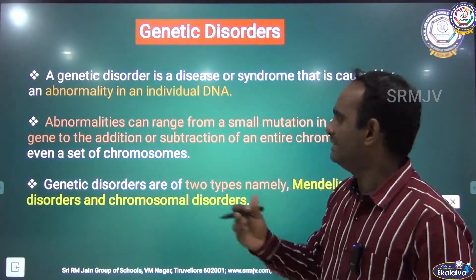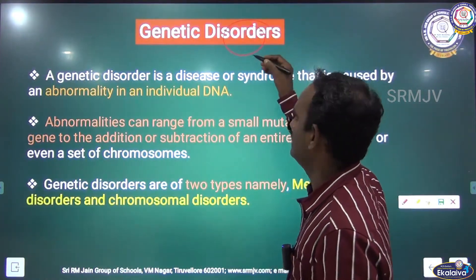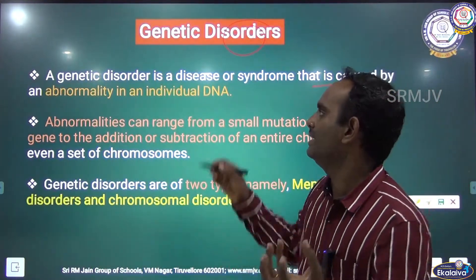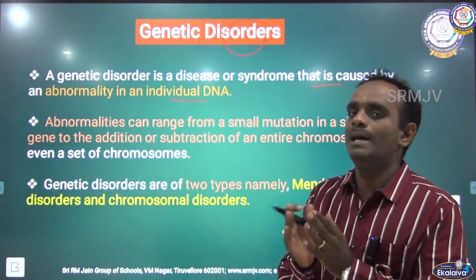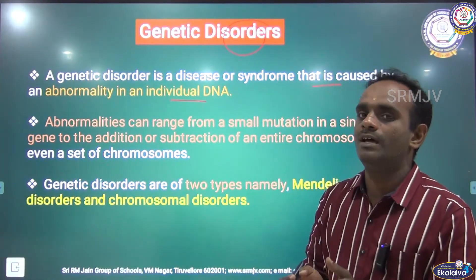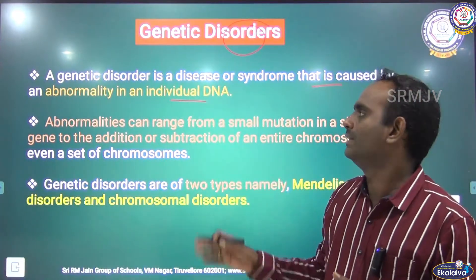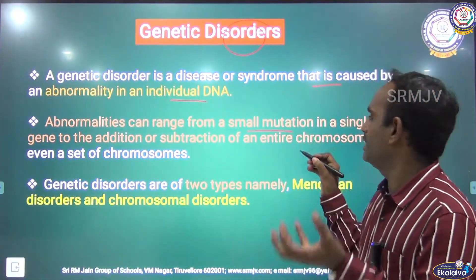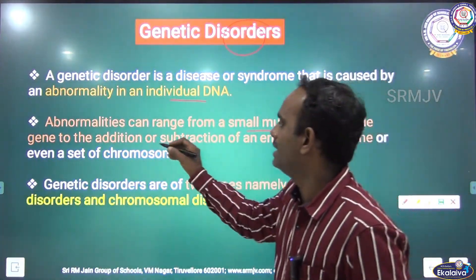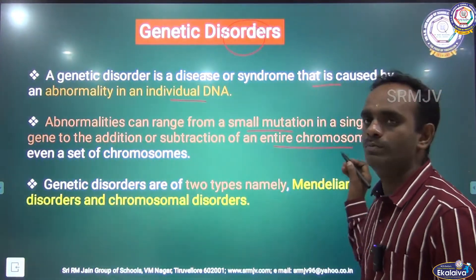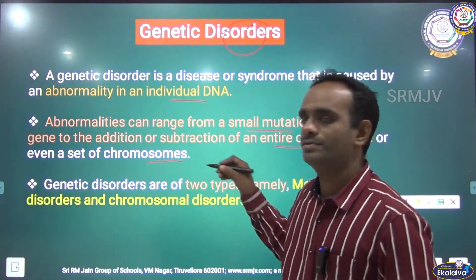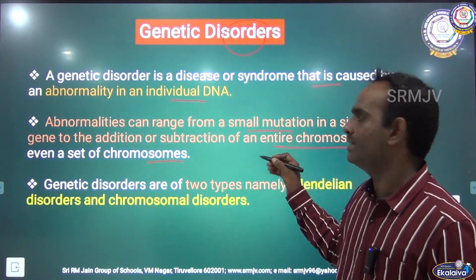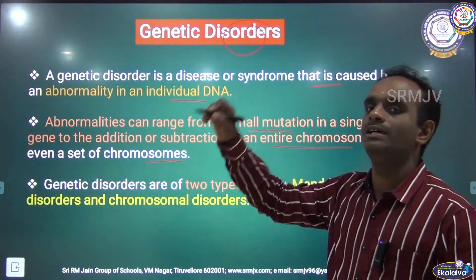A genetic disorder is a disease or a syndrome that is caused by abnormality in an individual's DNA. If any damage takes place in the nucleotide sequence or any problem happens in the individual DNA, that leads to genetic disorder. Abnormalities can range from a small mutation in a single gene to the addition or subtraction of an entire chromosome or even a set of chromosomes.